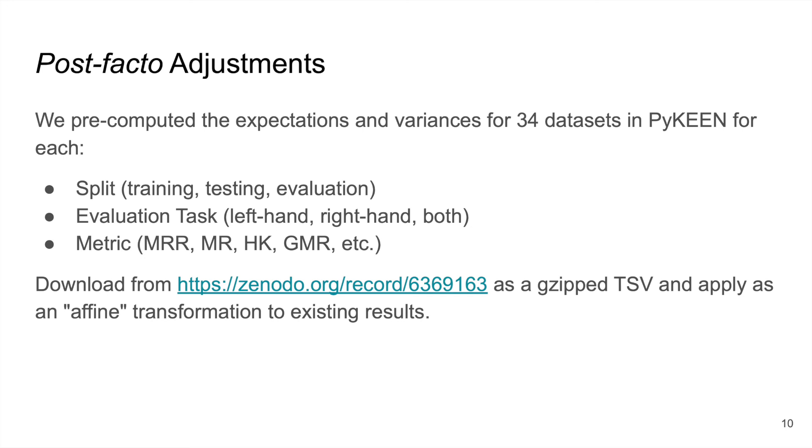So because of the formulation of these adjustments, they are affine, which means they can be applied as a linear transformation after the fact. As a last remark, we pre-computed these values for all of the datasets in PyKEEN in a few different scenarios so that they can be reused by anybody, even after the fact, regardless of how they trained and evaluated their knowledge graph embedding models, even with a different software package. So this dataset's available on Zenodo under the CC0 license.